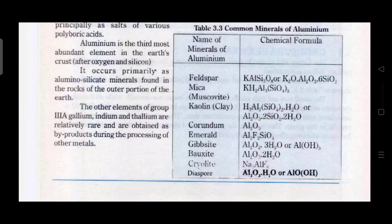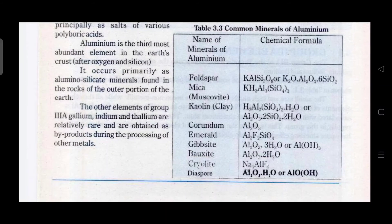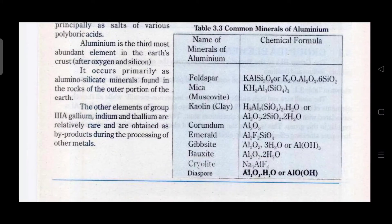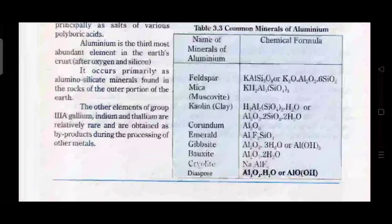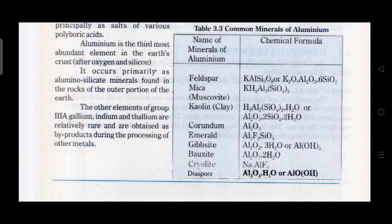Aluminium teesra sab se zyada zameen par paaya jaane wala element hai. Ye aluminosilicates ki form mein paaya jaata hai aur zyada tar rocks ke outer portion of earth mein paaya jaata hai. Group 3A ke baaki members rare elements hain aur inko generally doosari metals ki processing ke zariye haasil kiya jaata hai.